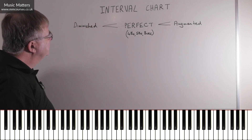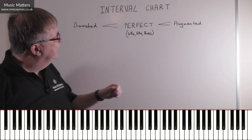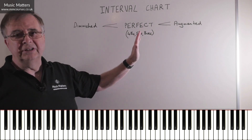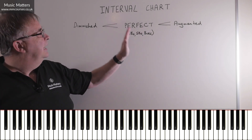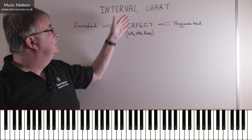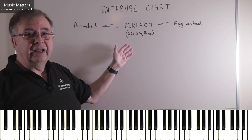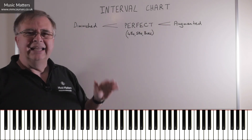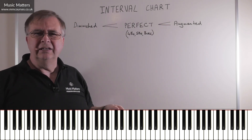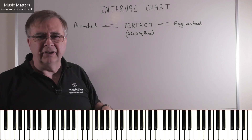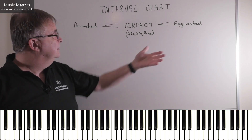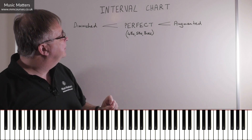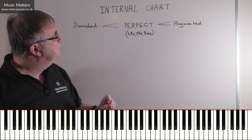It's quite useful, because if you know that the fourths, fifths, and octaves are the perfect intervals, and you know that a perfect interval is either perfect, or it gets changed to augmented or diminished, it stops you calling things minor fifths and such — because there's no minor involved when you're dealing with a perfect interval.